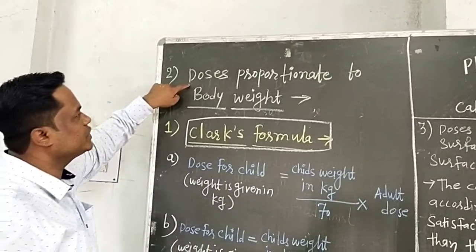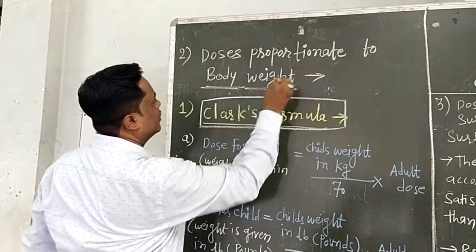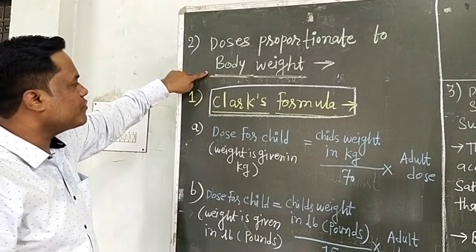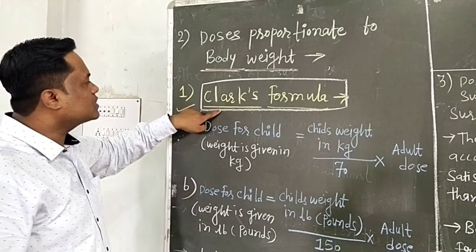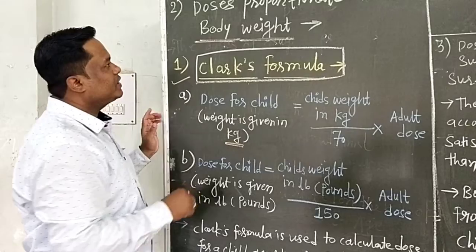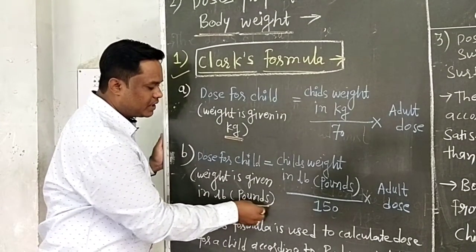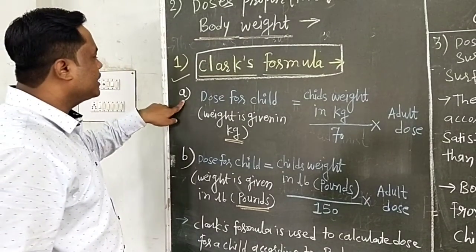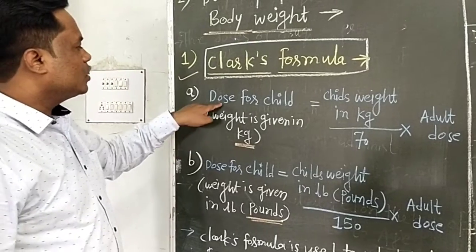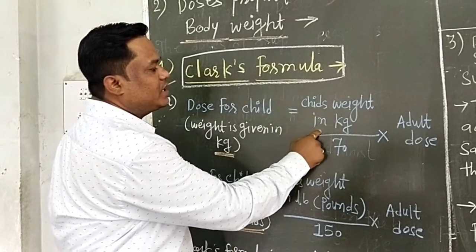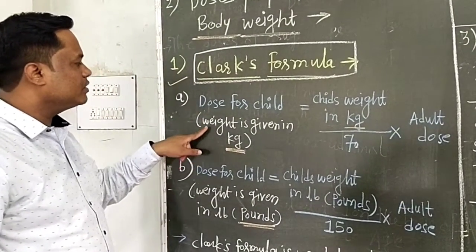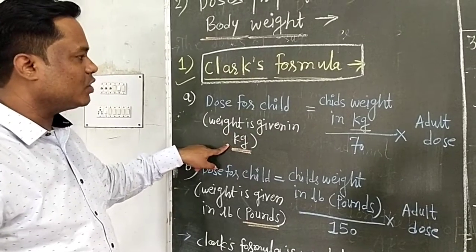Next, we look at doses proportionate to body weight. For calculating the dose based on body weight, we use Clark's formula. When weight is given in kilograms, the formula is: Dose for a child = (Child's weight in kg) / 70 × Adult dose. When weight is given in pounds (LB), the formula is: Dose for a child = (Child's weight in LB) / 150 × Adult dose.